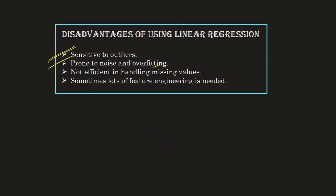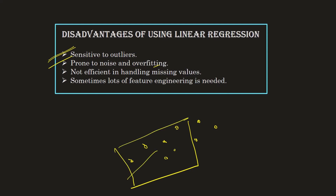Overfitting is a term we will explore further when we cover the topic of bias and variance. To simplify: when we train a machine learning algorithm, we use about 70 to 80 percent of the data for training to draw the best fit line, and we leave the rest — around 20 to 30 percent — for testing purposes.